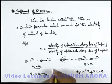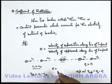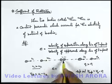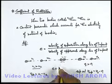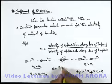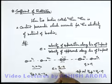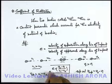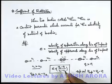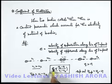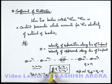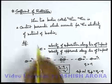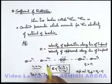So in this particular collision, if we define the coefficient of restitution, the value of e can be written as (v2 minus v1) upon (u1 minus u2). This is how mathematically the coefficient of restitution is defined for a given situation. This coefficient of restitution's numerical value depends on the type of material of bodies which are colliding.